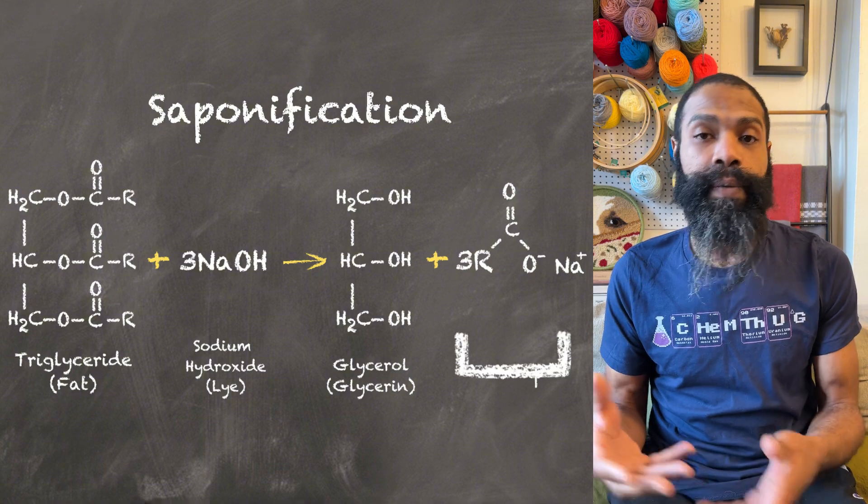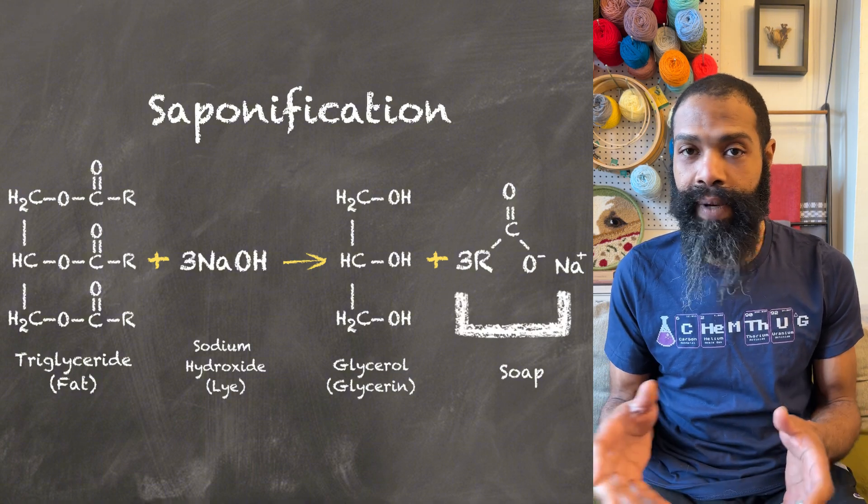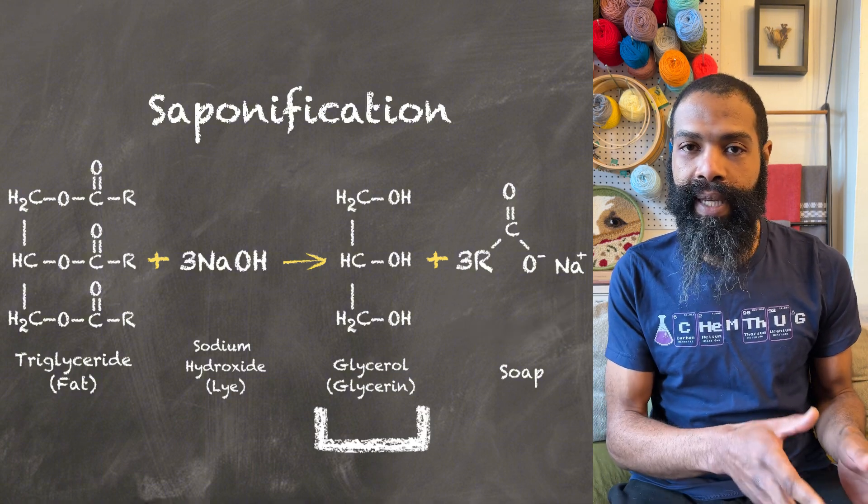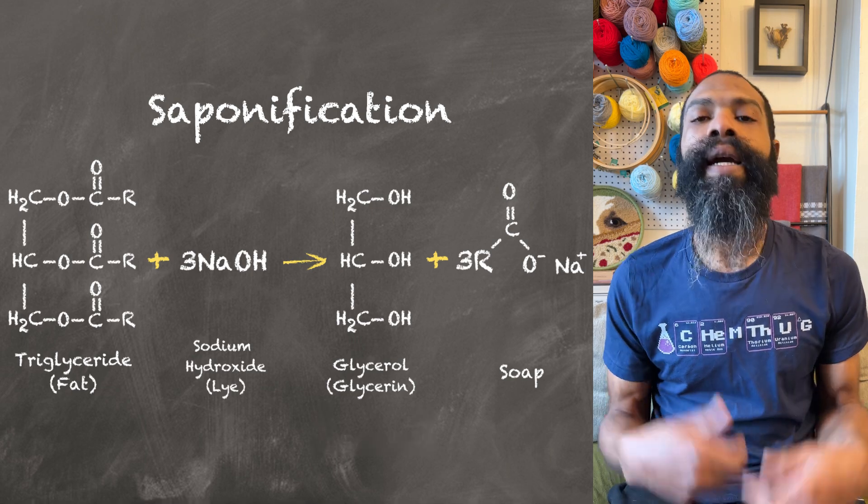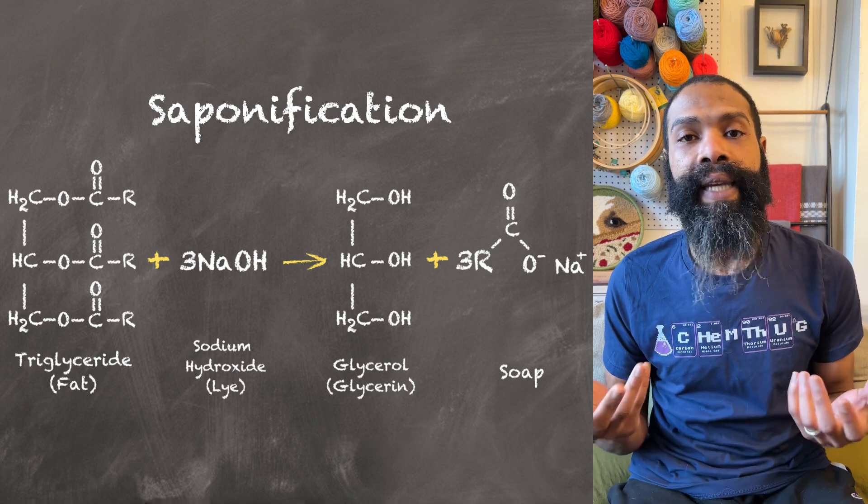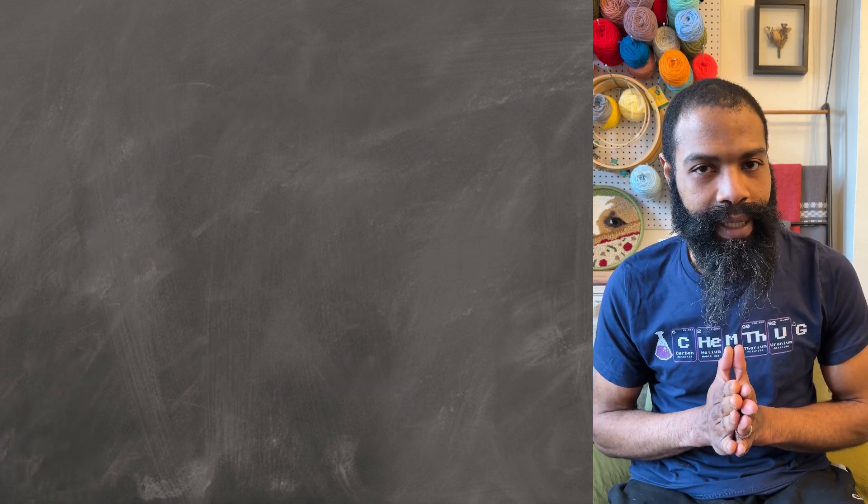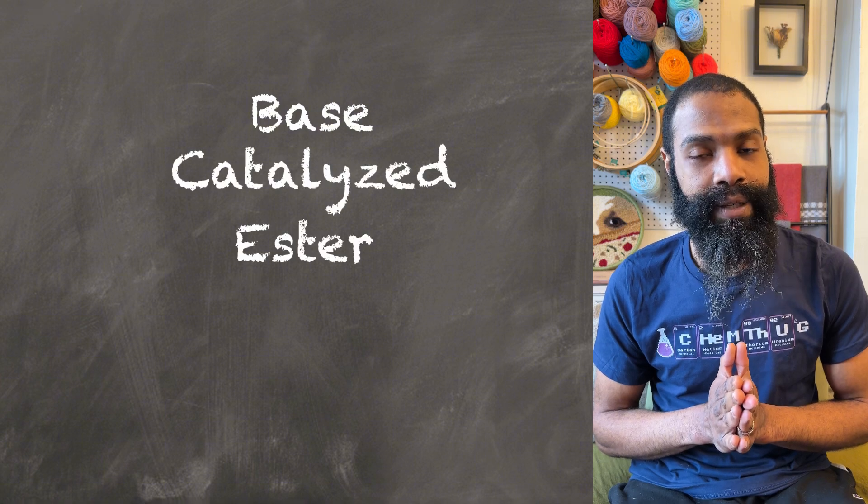And this happens two more times, and now you've got three soap molecules from your triglyceride ester and this other molecule that's left over, and that's called glycerin. Commonly, this is referred to as saponification. The advanced student might recognize this as a base-catalyzed ester hydrolysis.